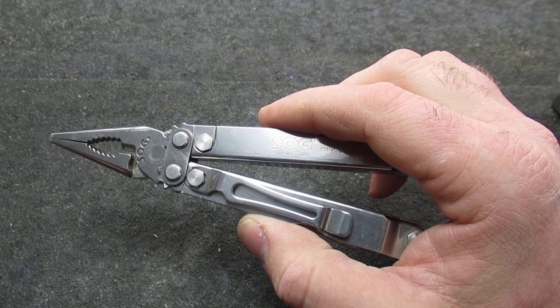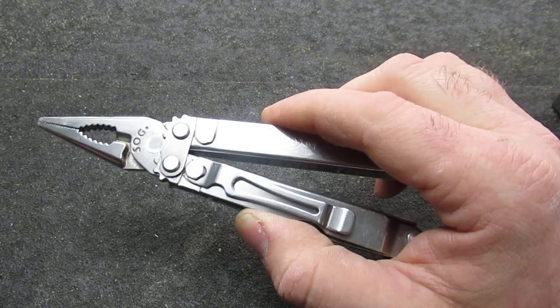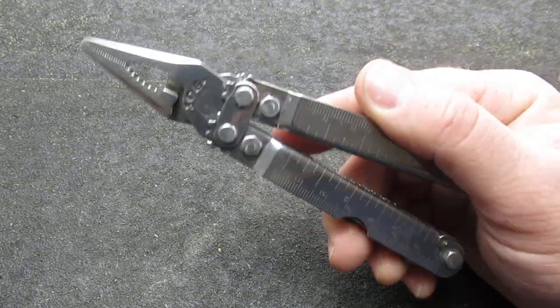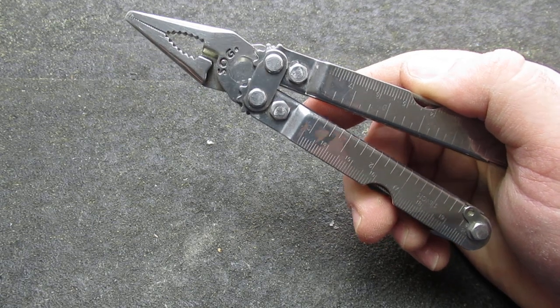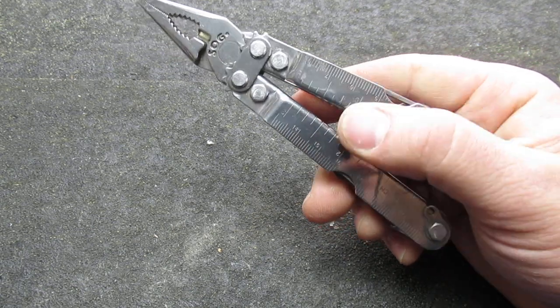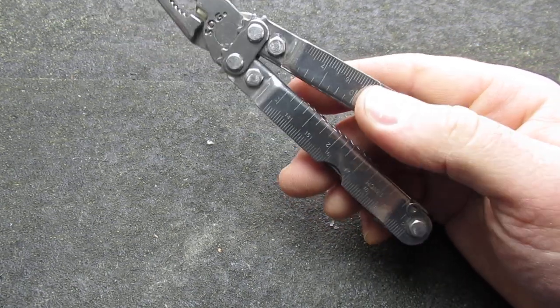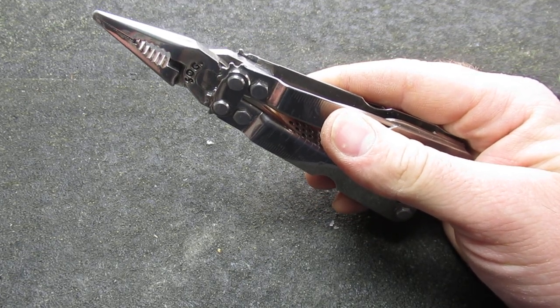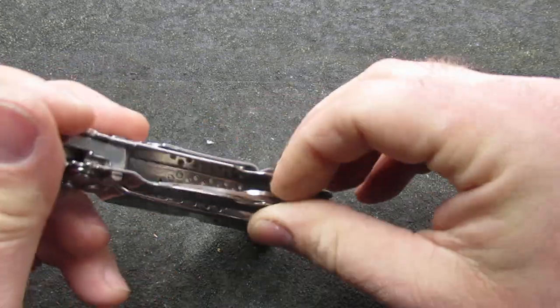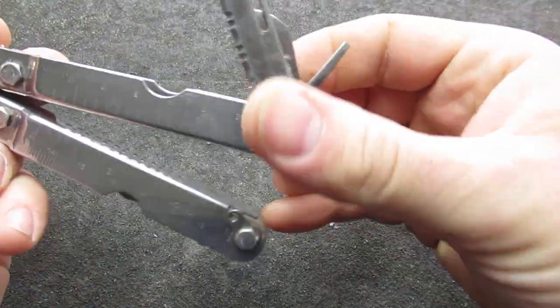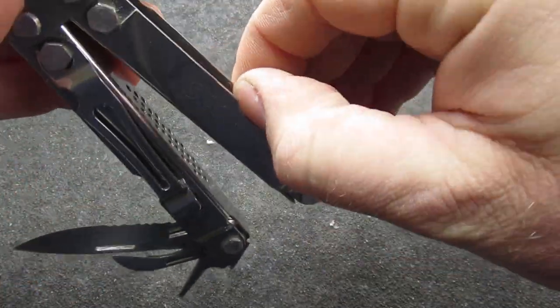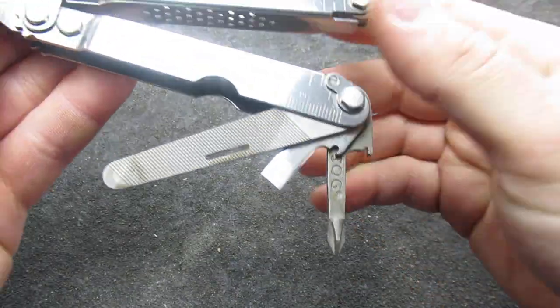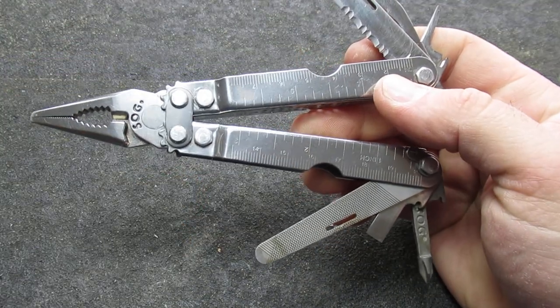On the one I hold in my hand, I believe it's supposed to come with a partially serrated blade, small and large screwdrivers, the Phillips screwdriver, the three-sided file - which mine has a can opener - and mine is actually supposed to come with the awl. But instead of the awl, it has... well, I don't think it has the awl on this one. So anyway, we don't have the awl on this tool.